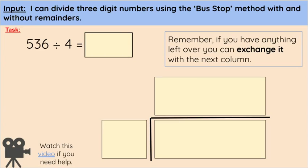We're going to continue using the bus stop method, but we want to use three-digit numbers today. So let's have a look at our calculation here: 536 divided by 4. Now all that really means is that we want to know how many lots of 4 are in 536.